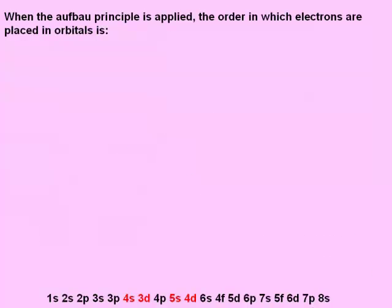When we apply the Aufbau principle, the order in which electrons are placed into subshells is shown below. This order can be determined by the n plus l values for each subshell and then placing them in the appropriate order. That process can be a bit time consuming, but luckily the order can be derived from a simple table shown here.